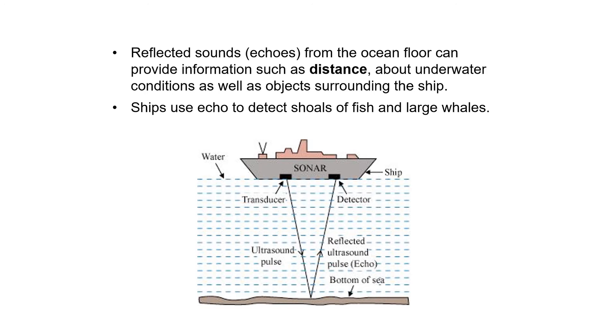So one of the application in your notes, as you can see, is when a ship transmit an ultrasound to the seabed and when the seabed reflects the sound, the ship will have a detector to detect the reflected sound. So a transducer means this is where the ultrasound is produced and then the sound will go down, hit the seabed and it will be detected. So why do we send ultrasound to the seabed?